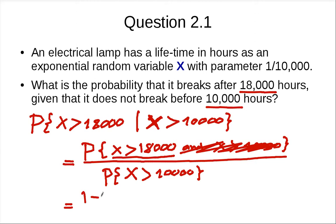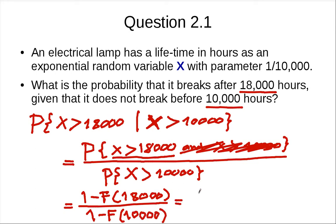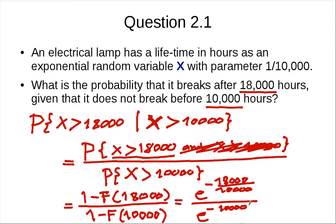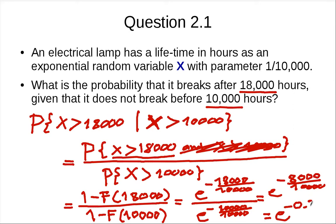This is (1 minus F(18,000)) over (1 minus F(10,000)), which equals e to the minus 18,000 over 10,000 divided by e to the minus 10,000 over 10,000. If you do the calculation, the exponents subtract, so you end up with e to the minus 8,000 over 10,000, which is e to the minus 0.8 — the same result, roughly 0.45.